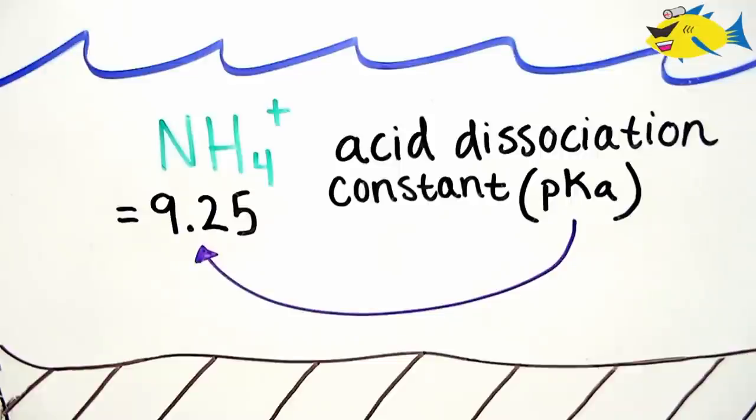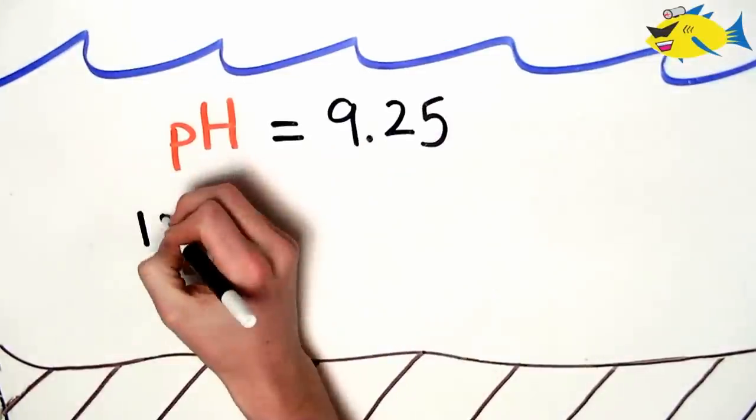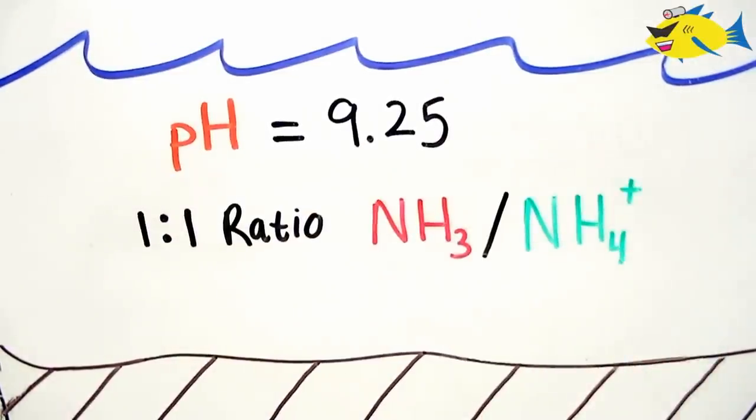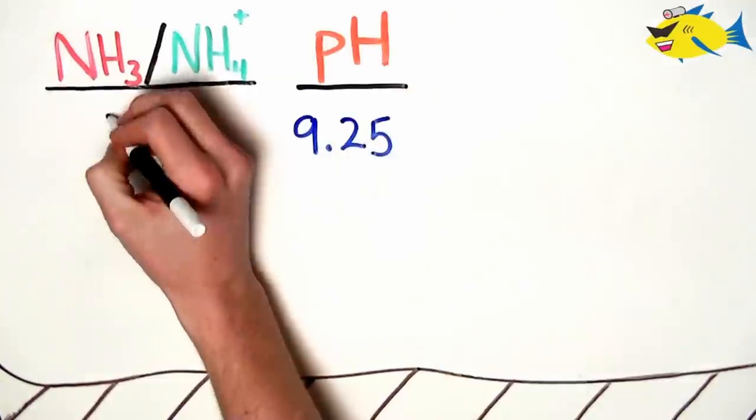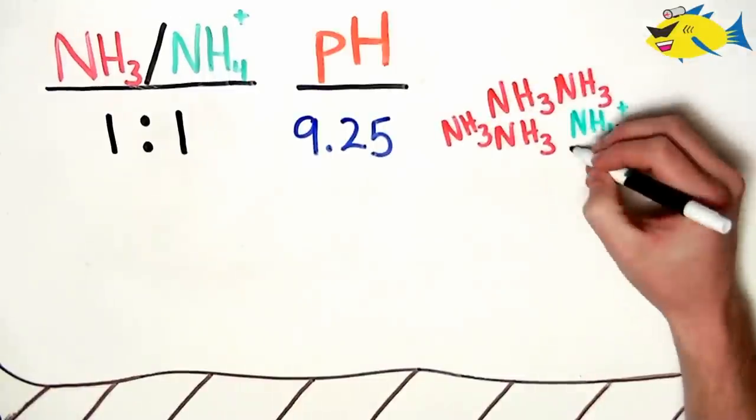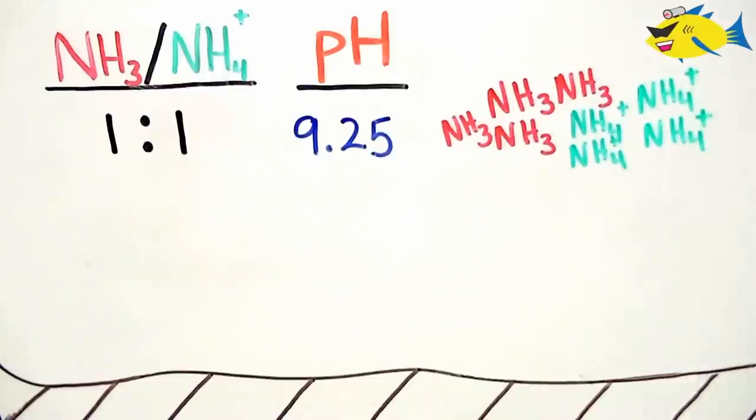Ammonium has an acid dissociation constant, or pKa, of 9.25, meaning that if a solution has a pH of 9.25, there will be a 1 to 1 or equal ratio of ammonia to ammonium. Now as the pH in our aquarium changes, so does this ratio and thus the relative concentration of each form. As a matter of fact, each full unit of pH change will result in a tenfold increase or decrease of this ratio, depending on which direction we move on the pH scale.